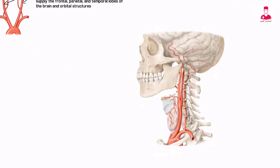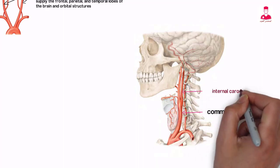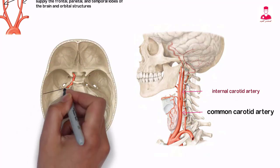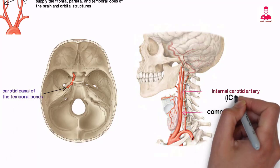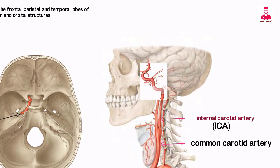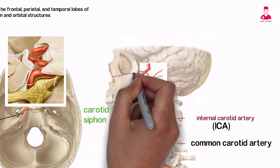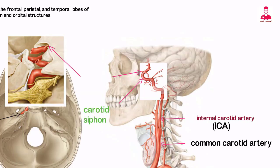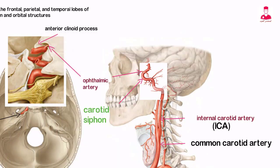These arteries arise from the bifurcation of the carotid arteries in the neck and can be divided into seven segments. They ascend through the base of the skull and enter the carotid canals of the temporal bones. The internal carotid artery then turns forward within the cavernous sinus, then up and backward through the dura mater, forming an S shape referred to as the carotid siphon, before it reaches the base of the brain. As the ICA exits the cavernous sinus, it branches into the ophthalmic artery just inferior to the anterior clinoid process.